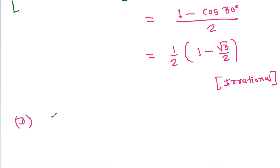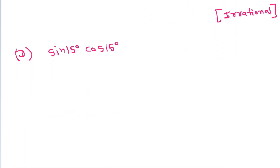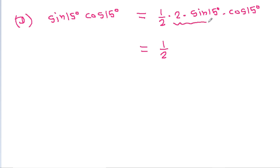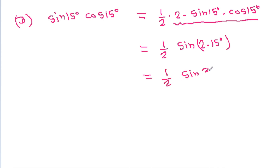Option D is sin(15°) · cos(15°). We multiply by (1/2) · 2 to get (1/2) · 2 sin(15°) cos(15°). Using the identity 2 sin A cos A = sin 2A, this equals (1/2) · sin(30°). Since sin(30°) = 1/2, the result is 1/4, which is rational.